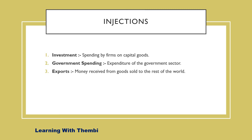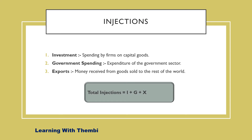And lastly, we have exports. Exports refer to the money received from goods which are sold to the rest of the world. Money flows into the circular flow from abroad when foreign residents buy our exports of goods and services. So the total injections in the economy are therefore the sum of investment, government expenditure, and also exports.